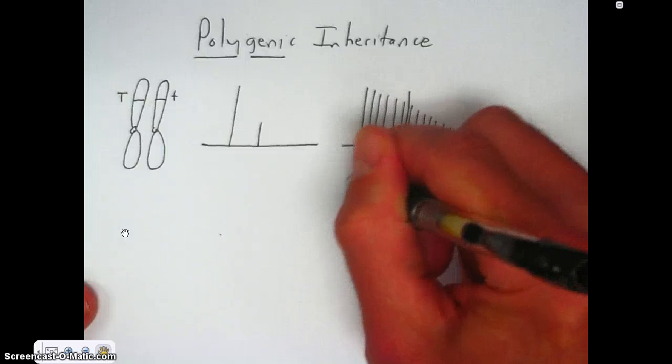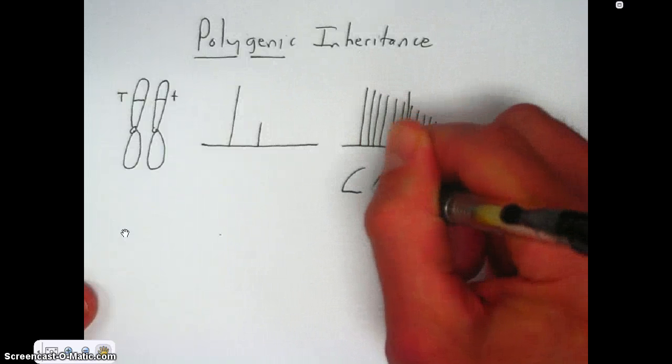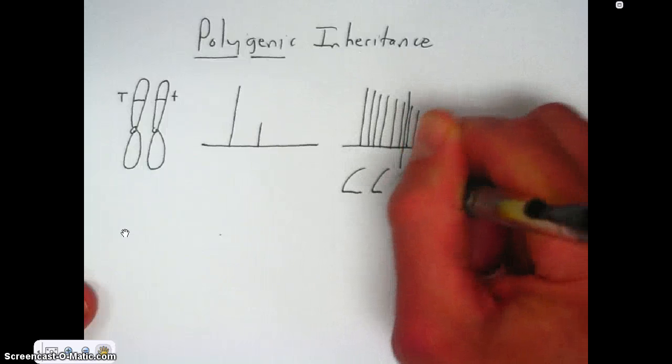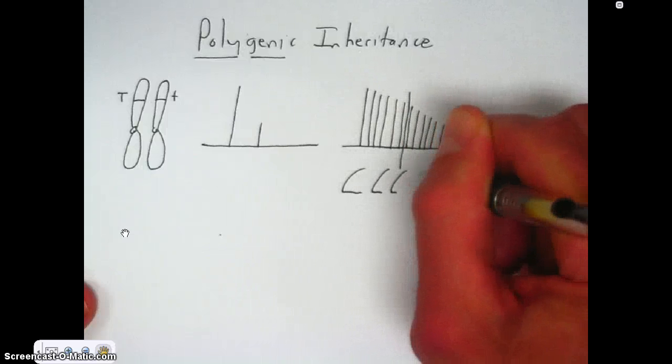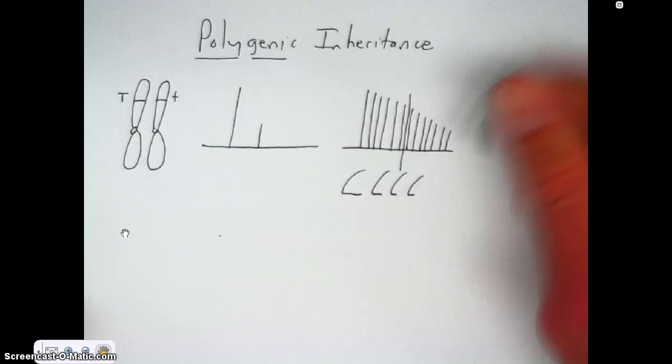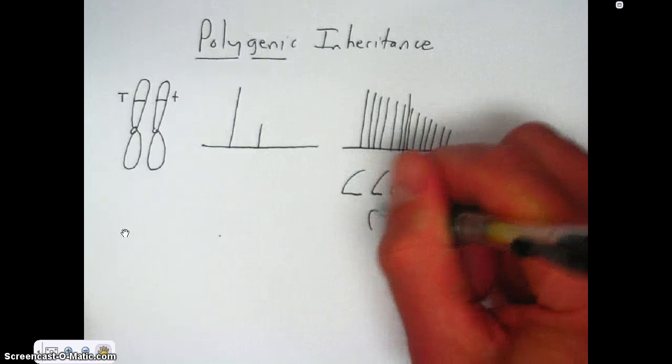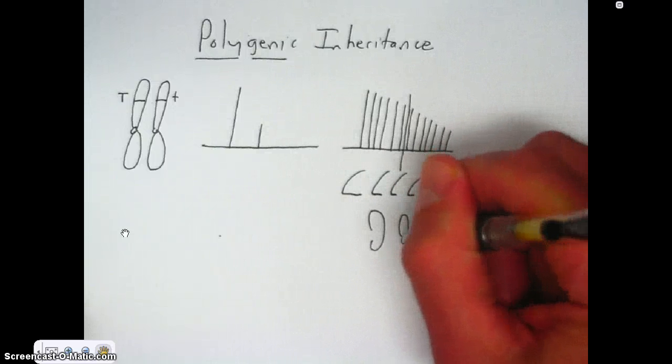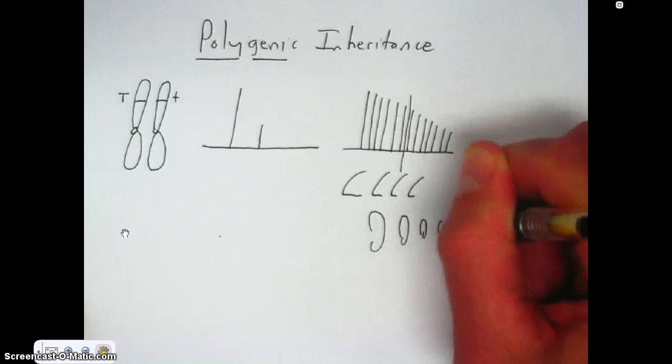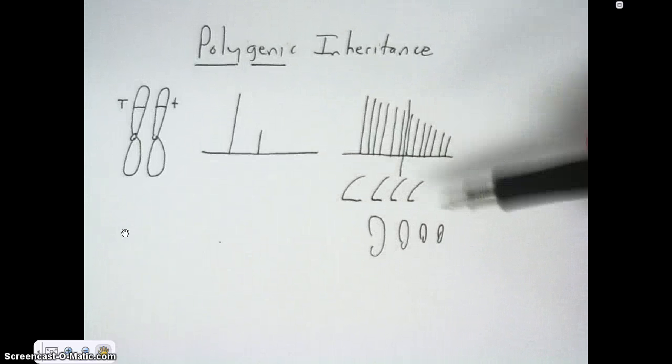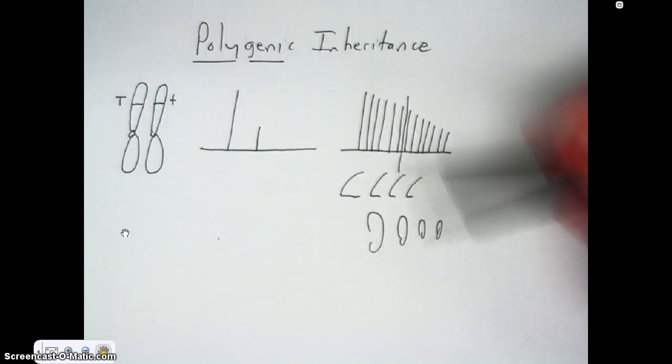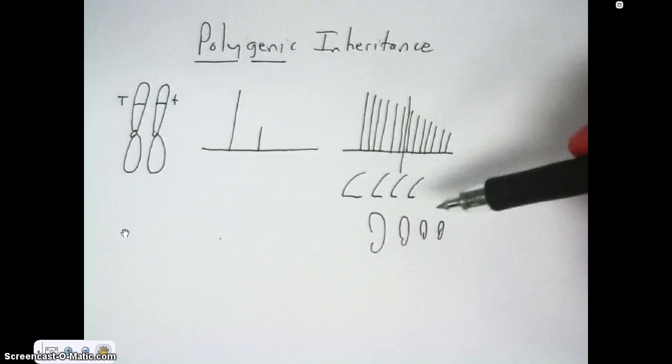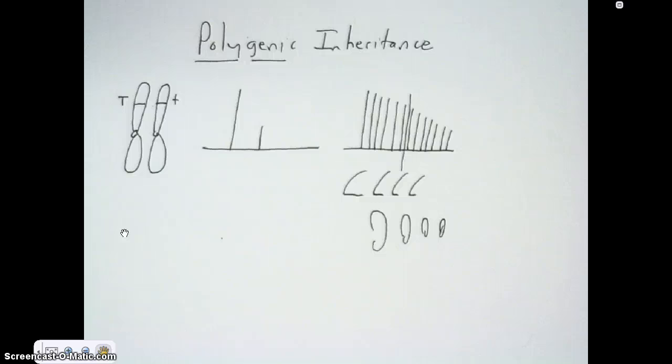Same thing with nose sizes. Somebody's nose might be this big, could be that big, could be that big, could be that big. You can see that they're all different sizes. Or ear size is another one. Different size ears. There's no cut and dry decision in terms of which one you're going to call big and what you're going to call small.